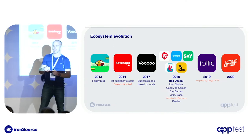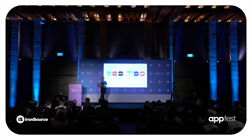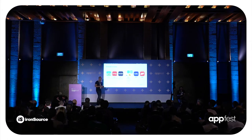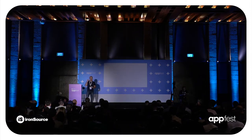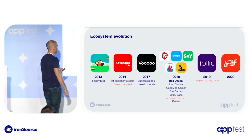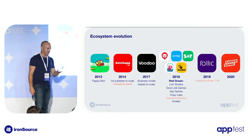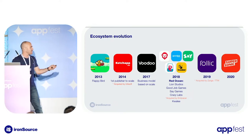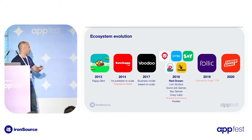A year after, Rollic came, mainly with the Turkish geo that was growing a lot for games after the success of Peak and after the macroeconomic situation in Turkey. And last but not least, Supersonic came in 2020. This is how it evolved from a publisher perspective.